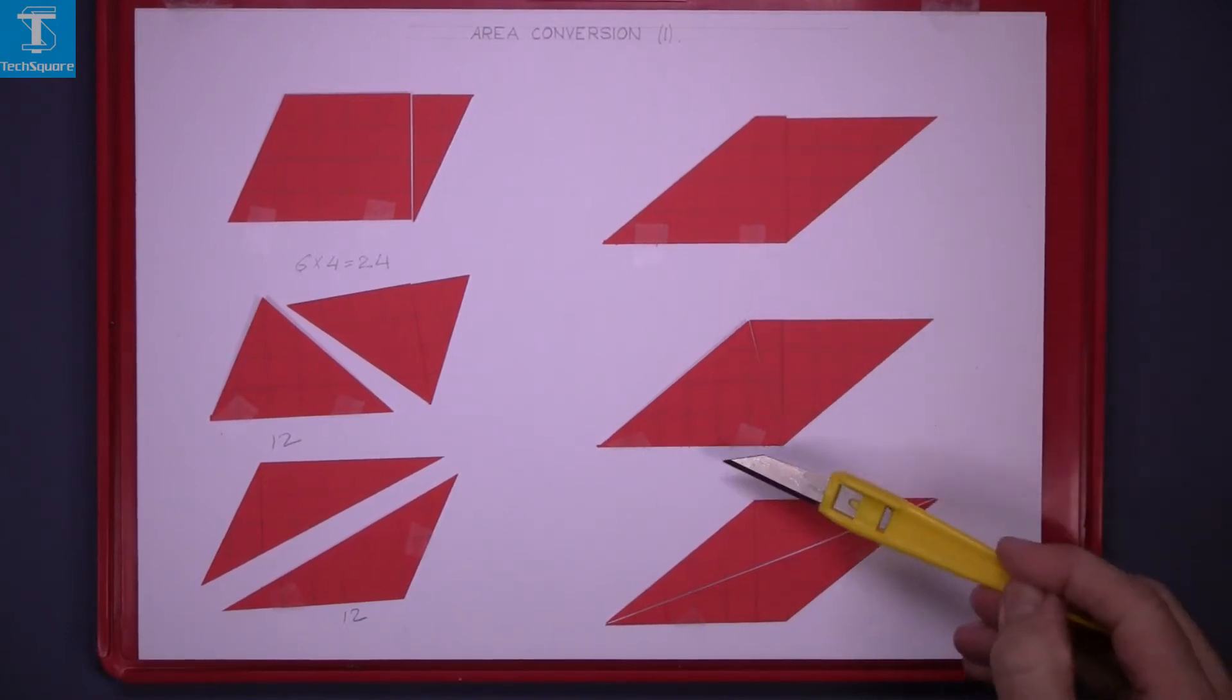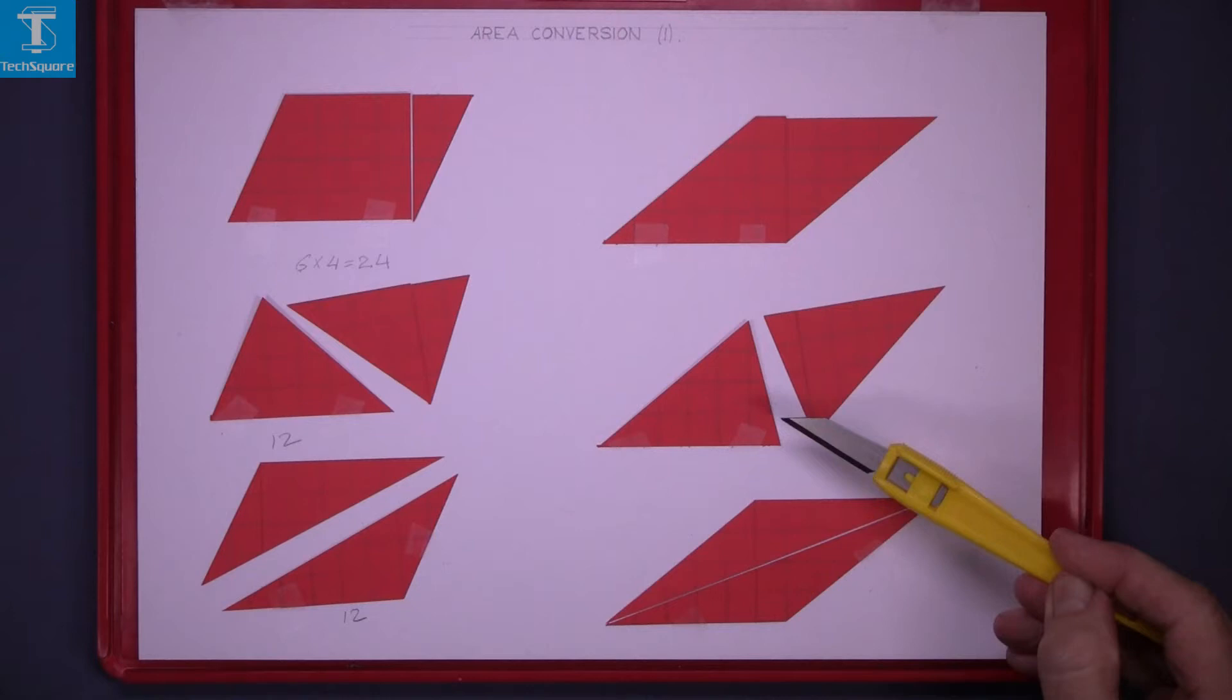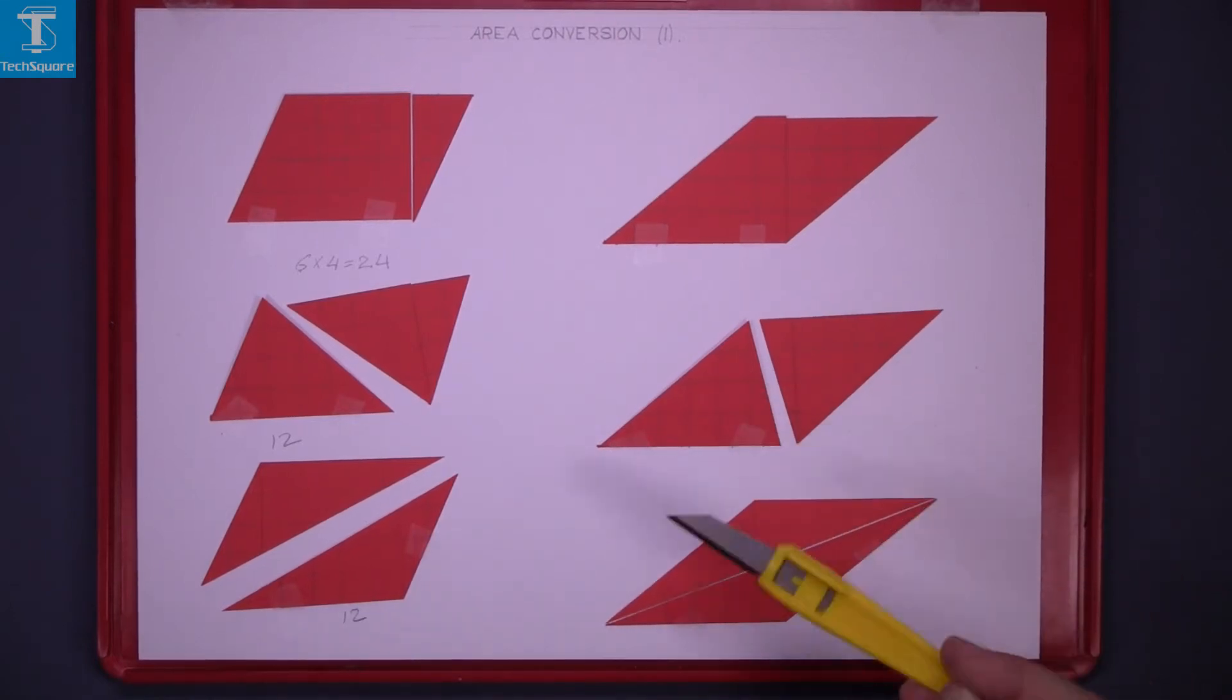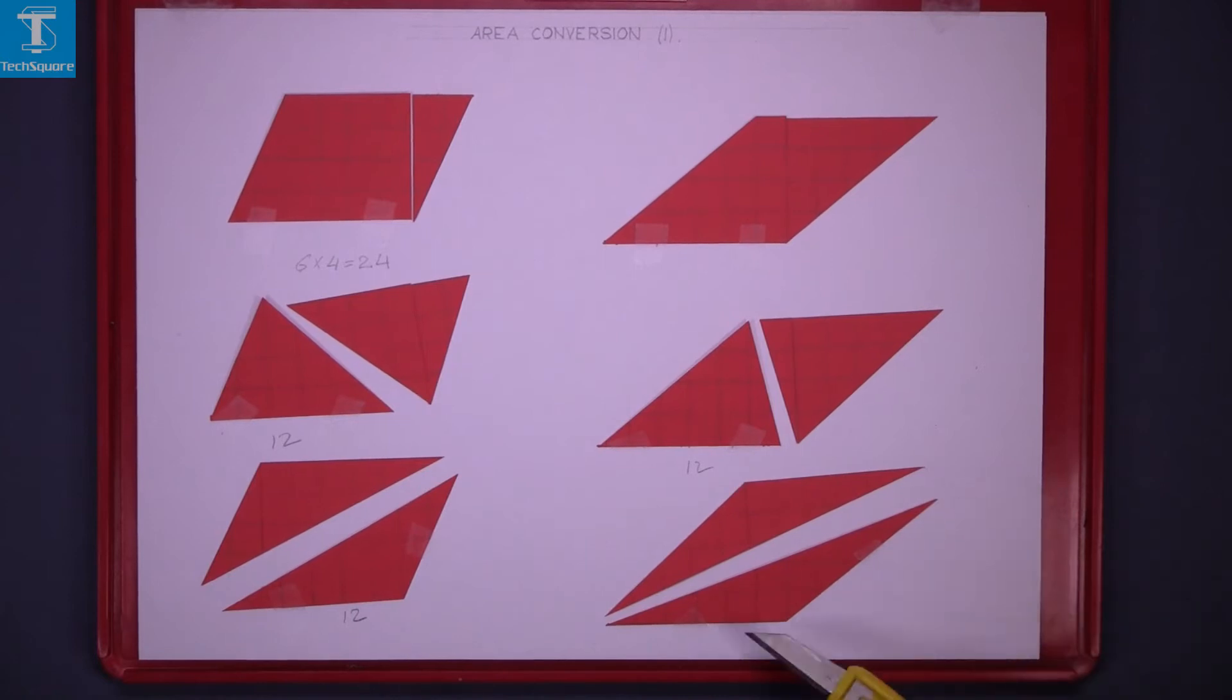This triangle is also 12. This shape here, same shape again, slice it along the short diagonal again the two triangles are equal and the area of 12. And the last one split along the long diagonal and the area of each triangle is 12.